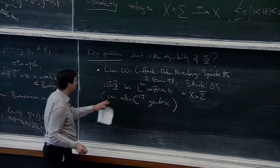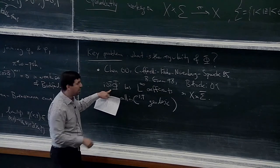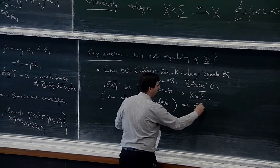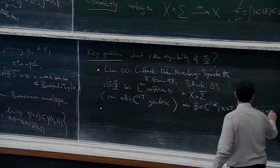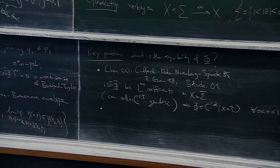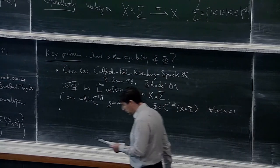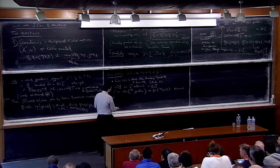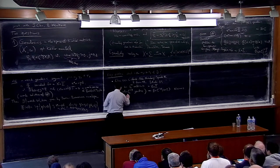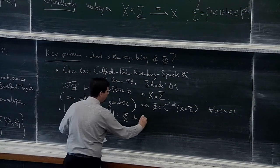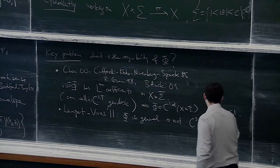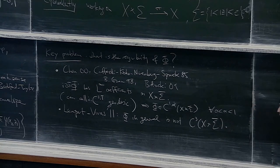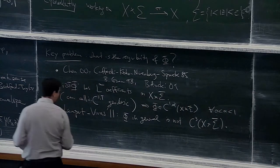This is the first positive result. In particular, because the Laplacian is L-infinity, by elliptic estimates this implies phi belongs to C^{1,alpha} of X cross sigma for all alpha strictly less than 1. So you are almost C^{1,1}, but maybe not quite. On the negative side, the first result was by Lempert and Vivas in 2011: phi in general is not C^3.